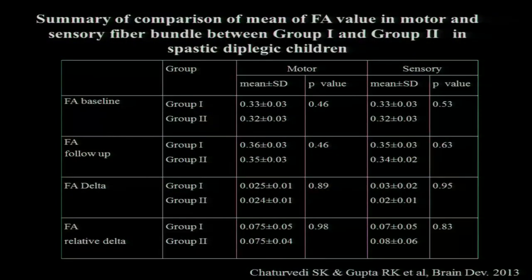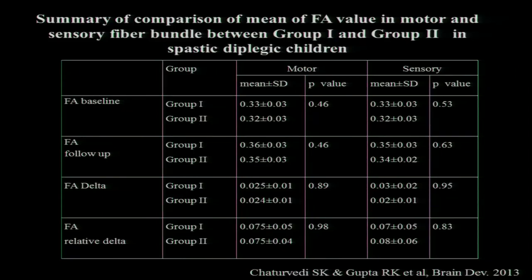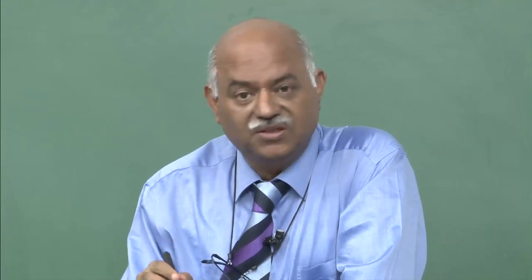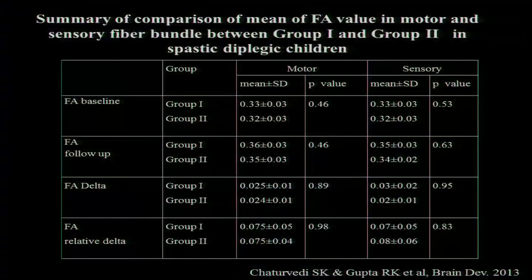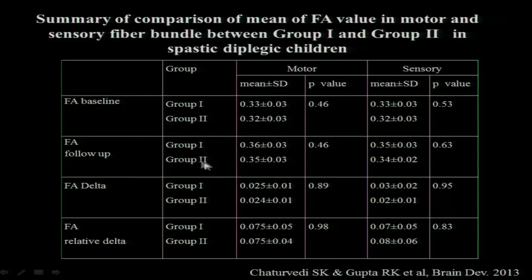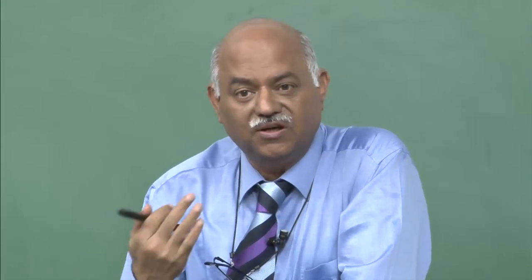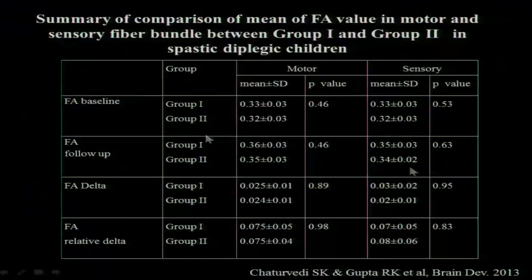When we directly compared the two groups — with and without botox — with subjects matched for grade, psychology, cognitive decline, IQ, and no epilepsy — a very selective patient group to avoid confounding results — there was no difference in FA values at baseline or follow-up. The delta and relative delta also showed no difference. So botox may not be of much value, except that temporarily it creates a window for better exercise; the end result at six months is the same for both groups.